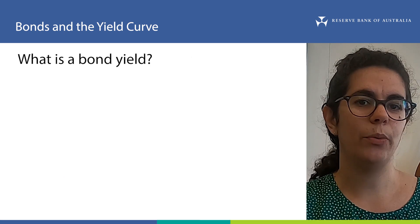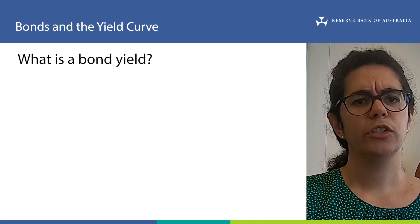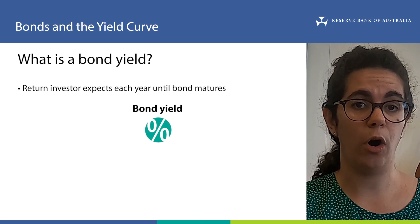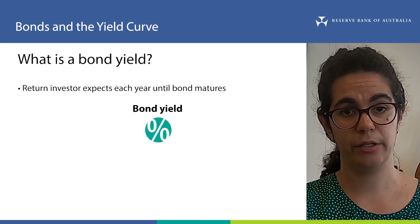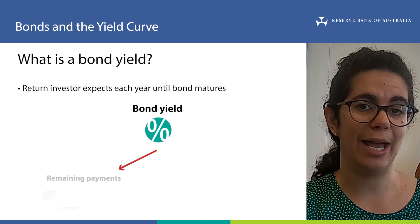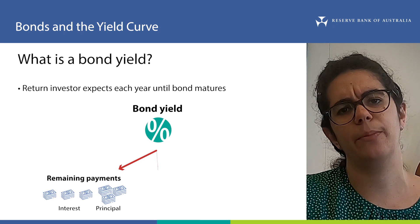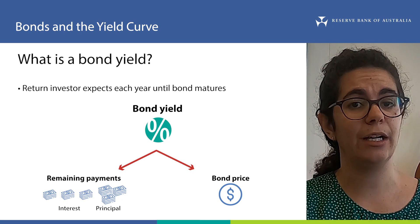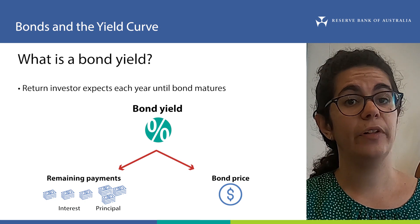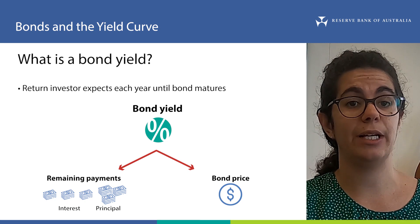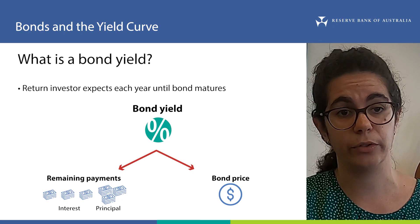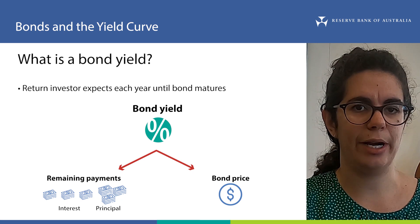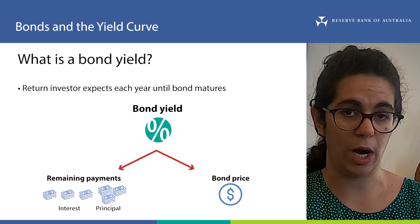This brings us on to our second topic: bond yields. A bond yield is the percentage return an investor expects to receive each year on a bond from now until the bond matures. It summarises the remaining payments that the owner of the bond will receive relative to the price they paid for the bond. At issuance, the yield represents the annualised cost of borrowing to the issuer; for the investor, it represents the annualised return on their investment. A bond's yield is expressed like a normal interest rate and it always moves in the opposite direction to its price.